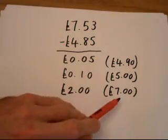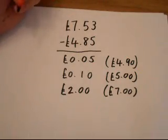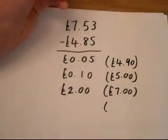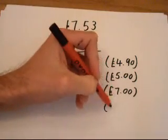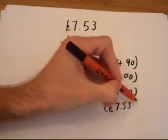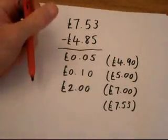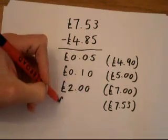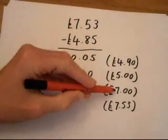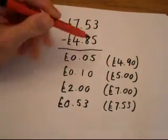And now finally, from £7 I have to get to £7.53. So this is nice and easy now. What did I add on to £7 to get to £7.53? So I'm going to put £7.53 over here first. And you can see clearly I added on £0.53 to get there. So over here I'm going to write down £0.53.